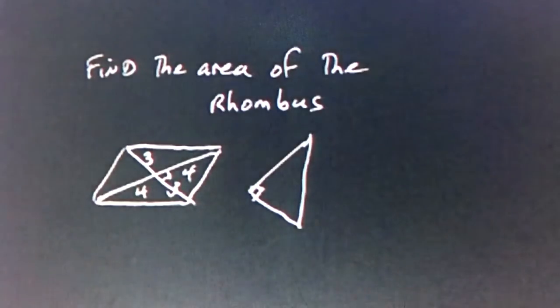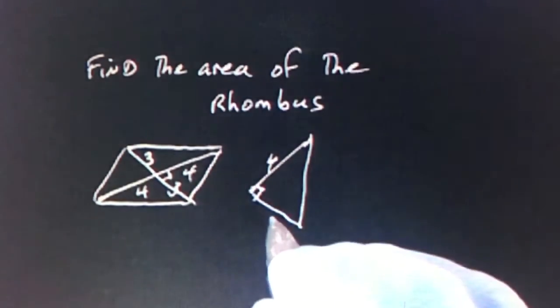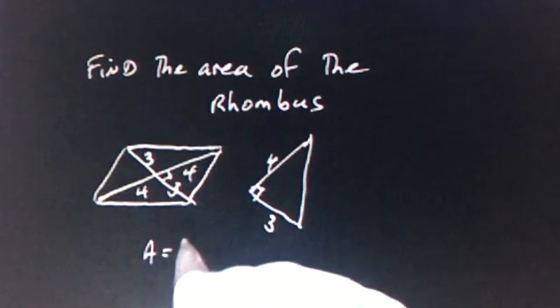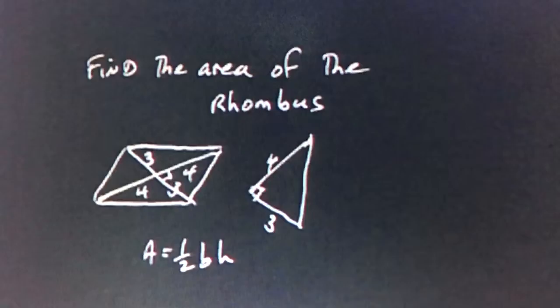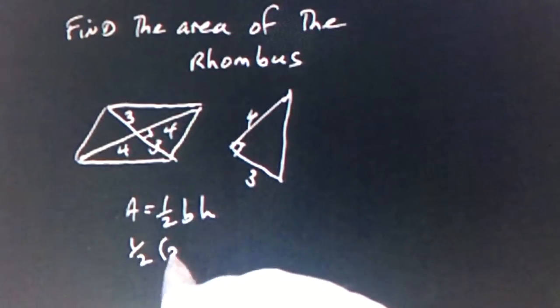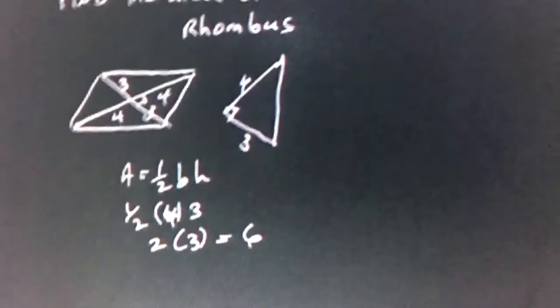And you note that we have a right triangle with base of 4, height 3. We can take the area of that, area equals 1 half base times height. And that means 1 half of 4 times 3, which is equal to 2 times 3, which is equal to 6.